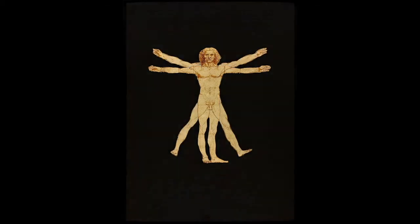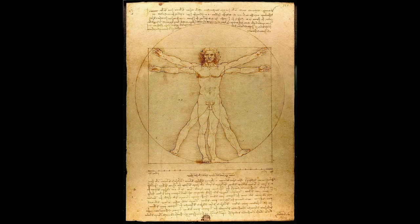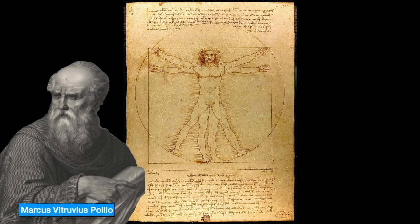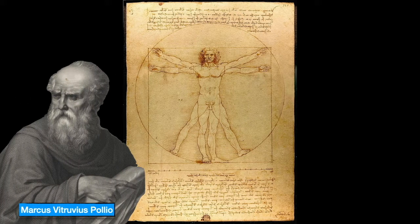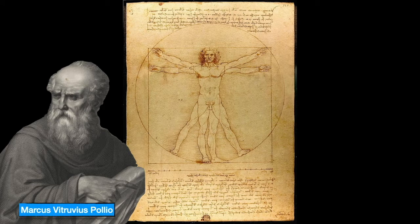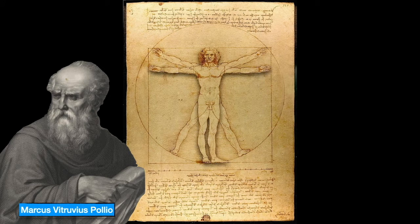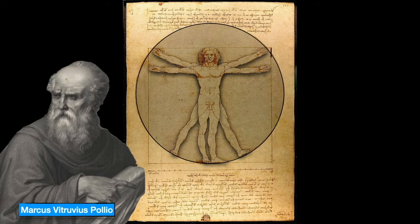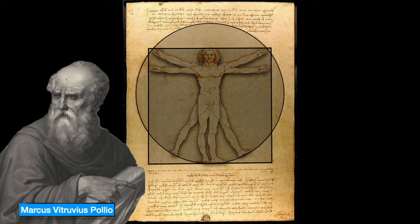The Vitruvian Man is a drawing made by the Italian polymath Leonardo da Vinci in about 1490. The man in this drawing is a famous Italian architect known as Vitruvius. The drawing, which is in ink on paper, depicts a man in two superimposed positions with his arms and legs apart and inscribed in a circle and square.